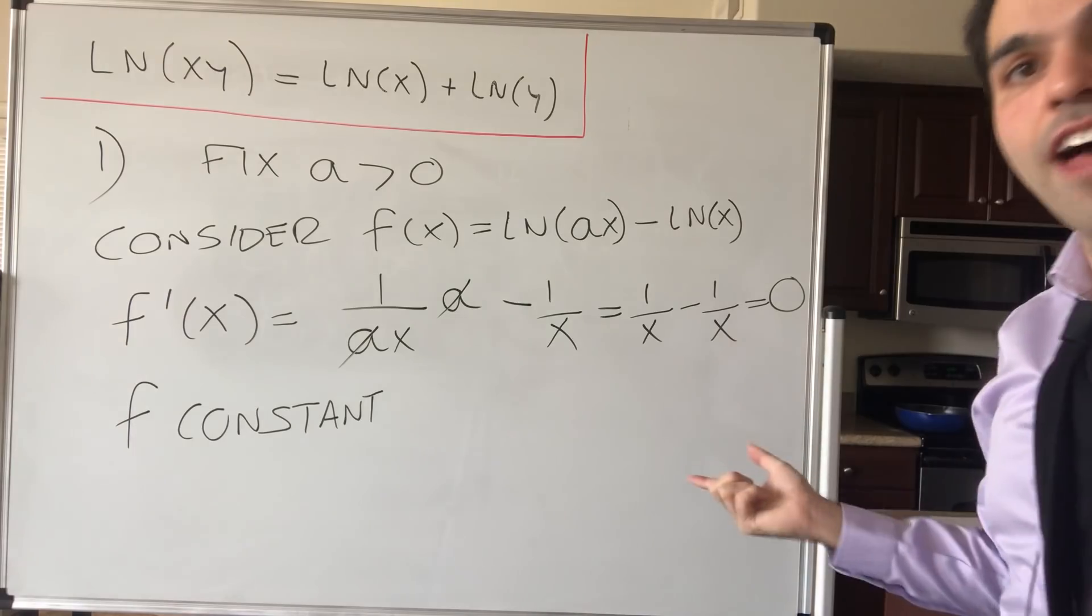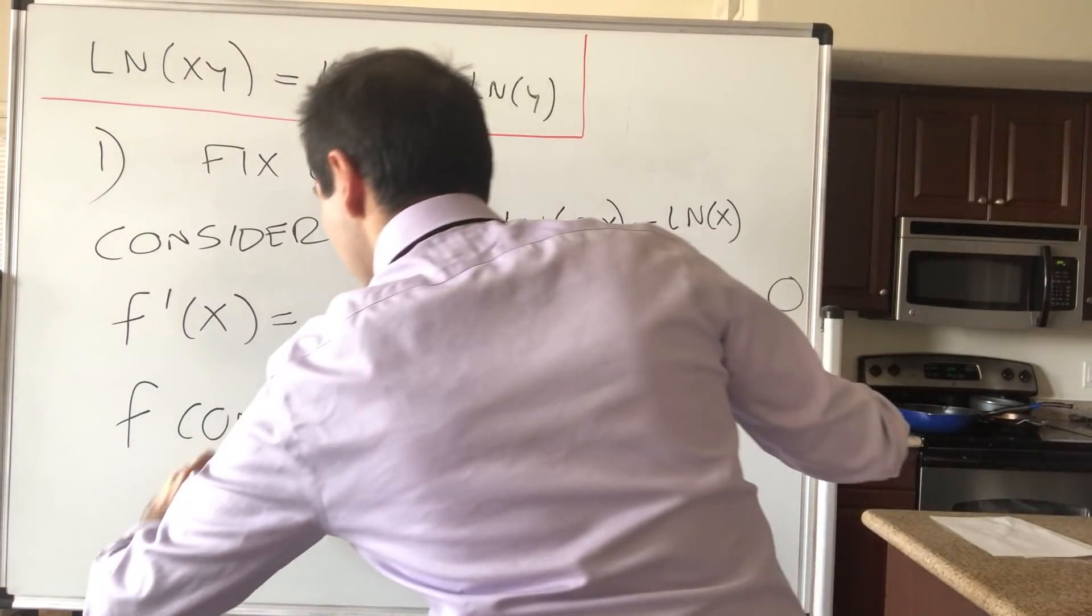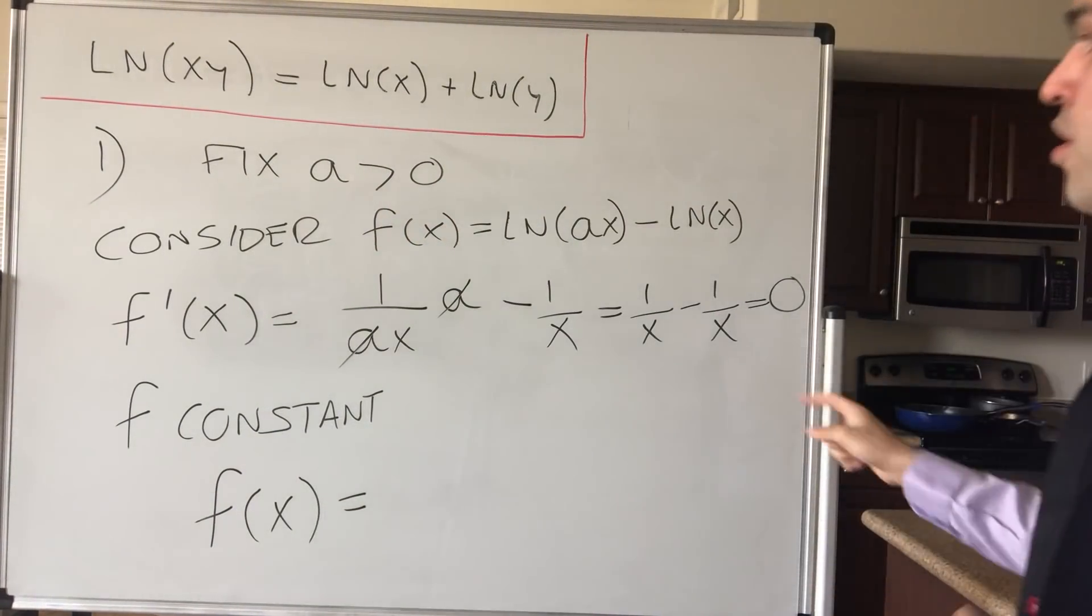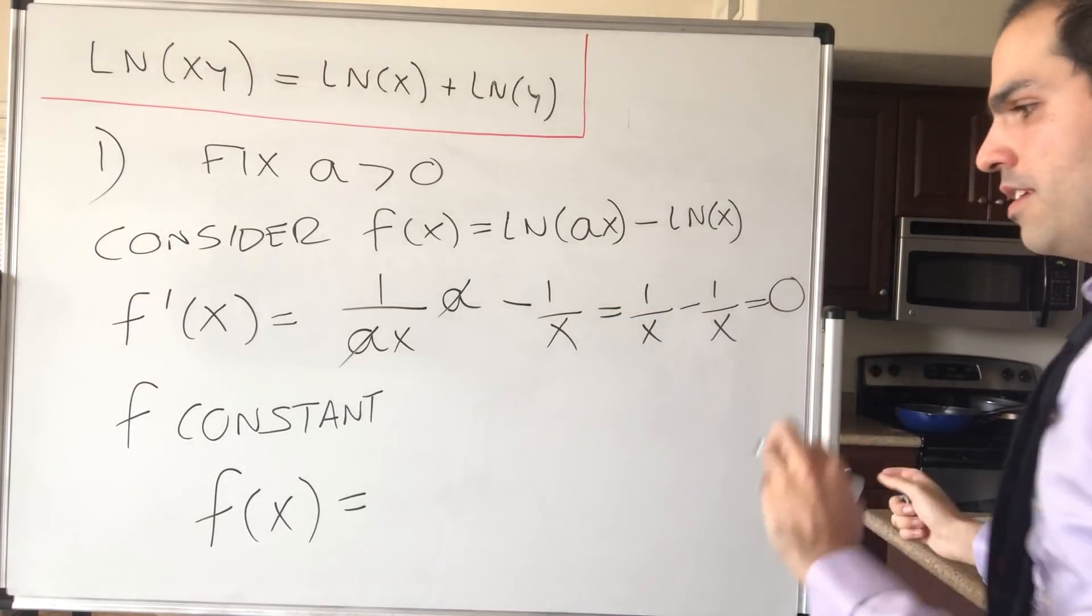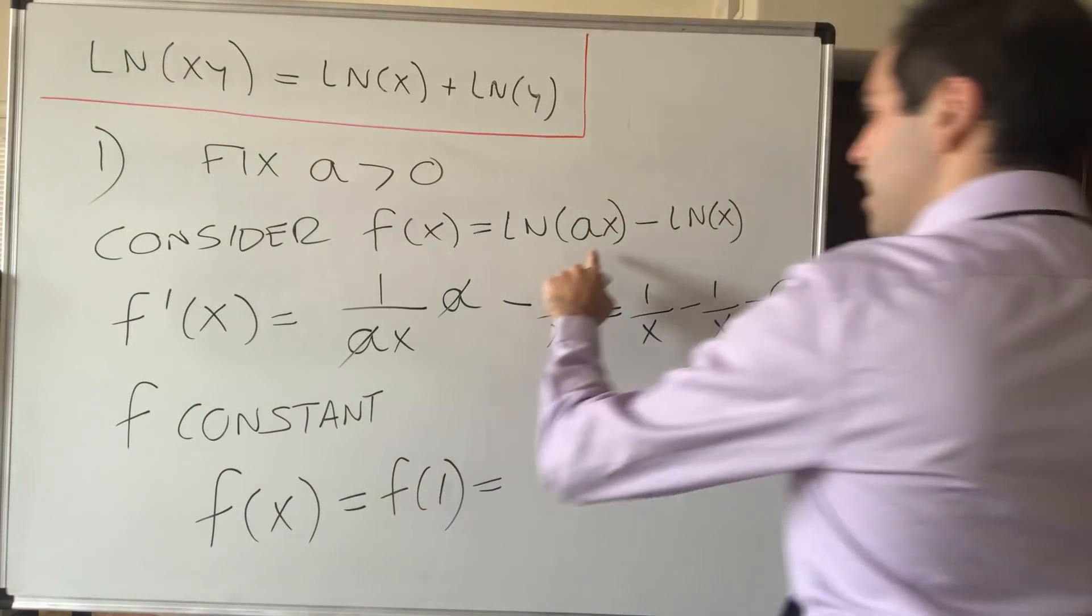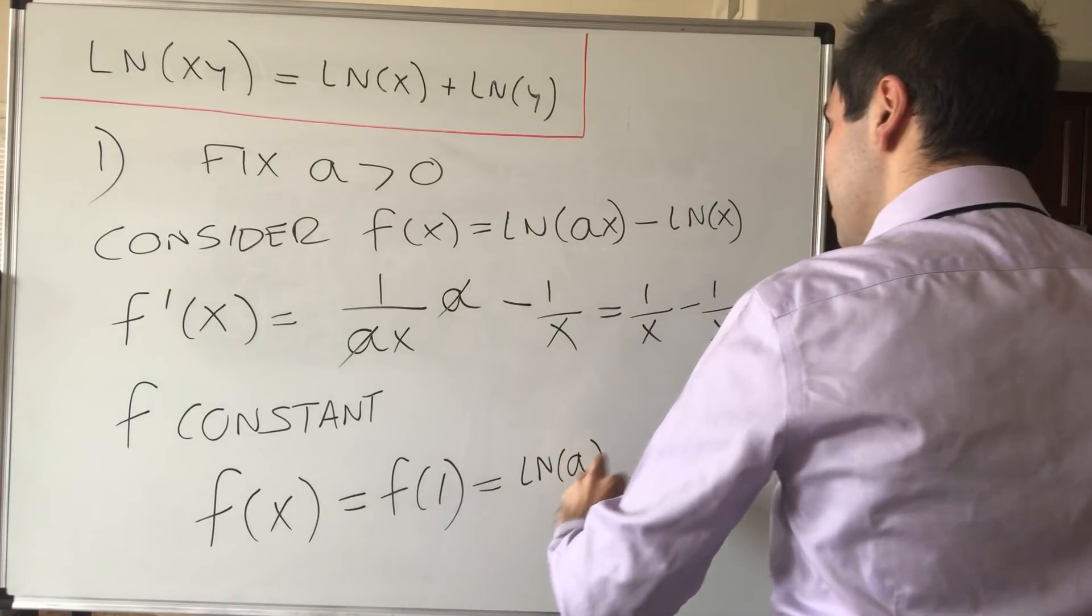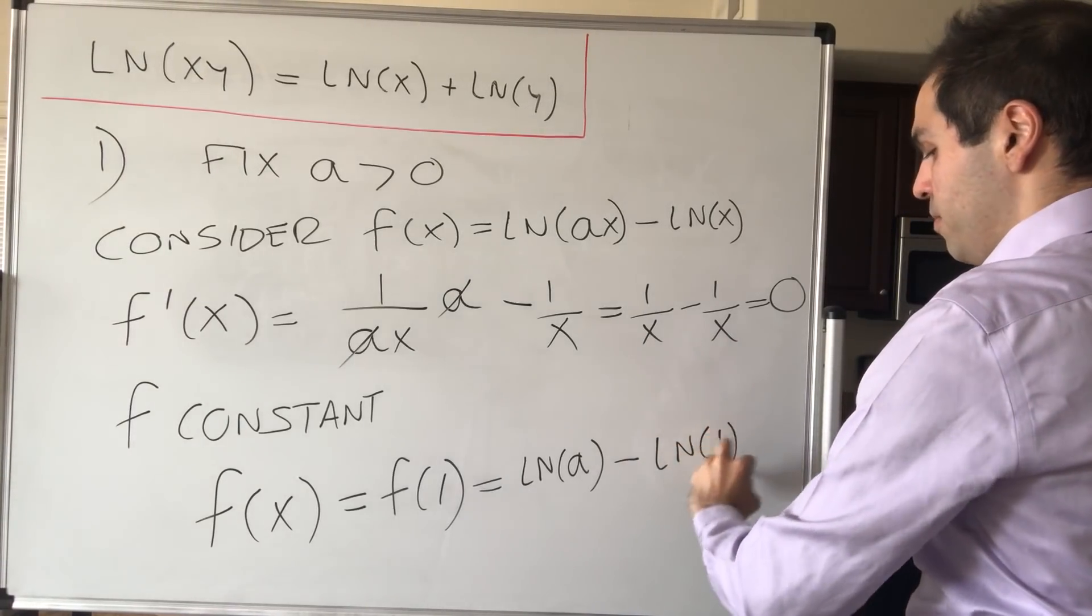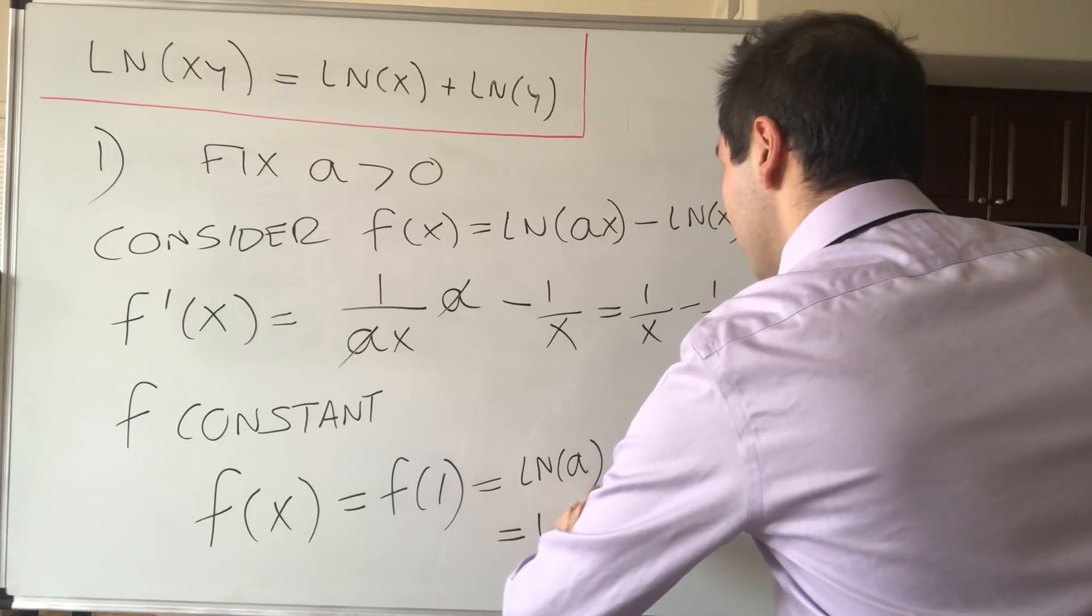In particular, f of x equals to f of whatever you want. So f of x equals f of whatever, and in particular you'll see why in a second, let x be 1. So f of x equals f of 1, and that just becomes ln of a times 1, so ln of a minus ln of 1, which is just 0. Remember by what I said at the beginning, and so in the end we get ln of a.